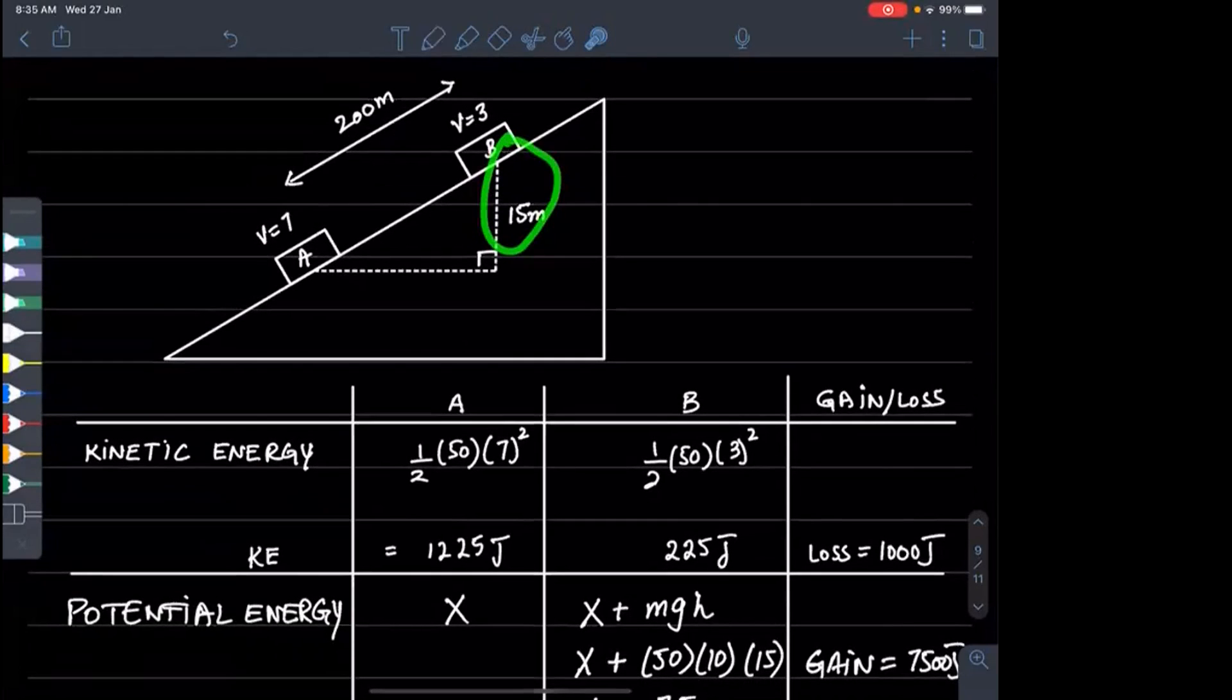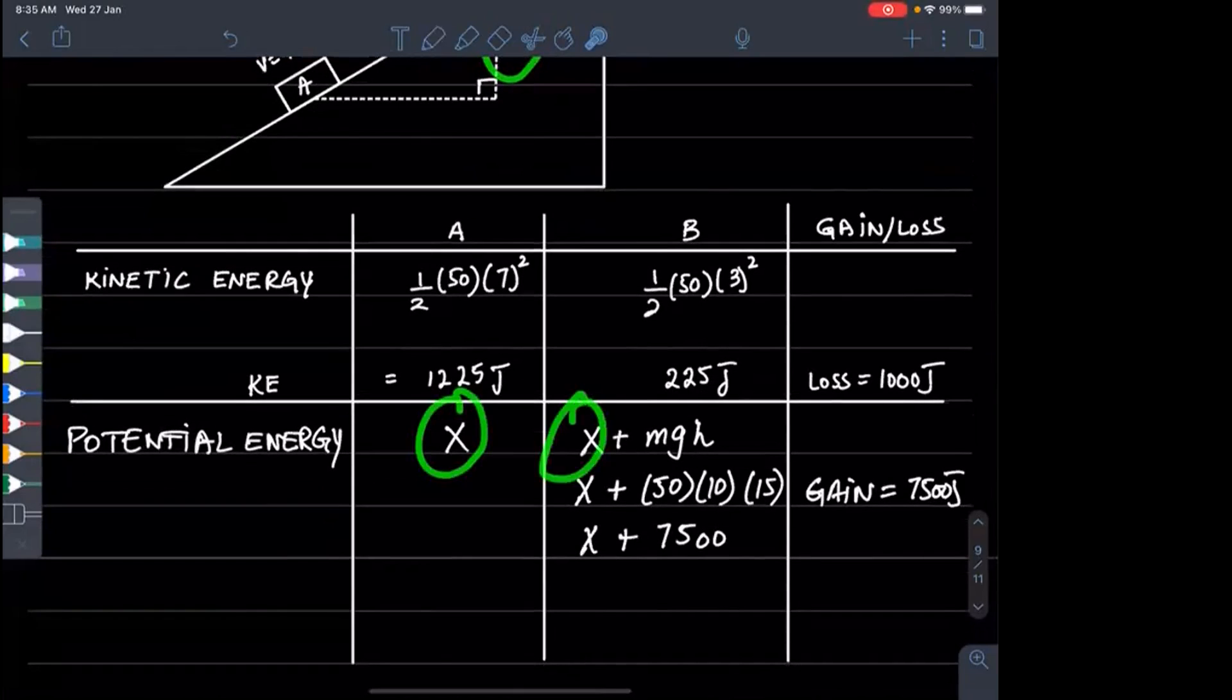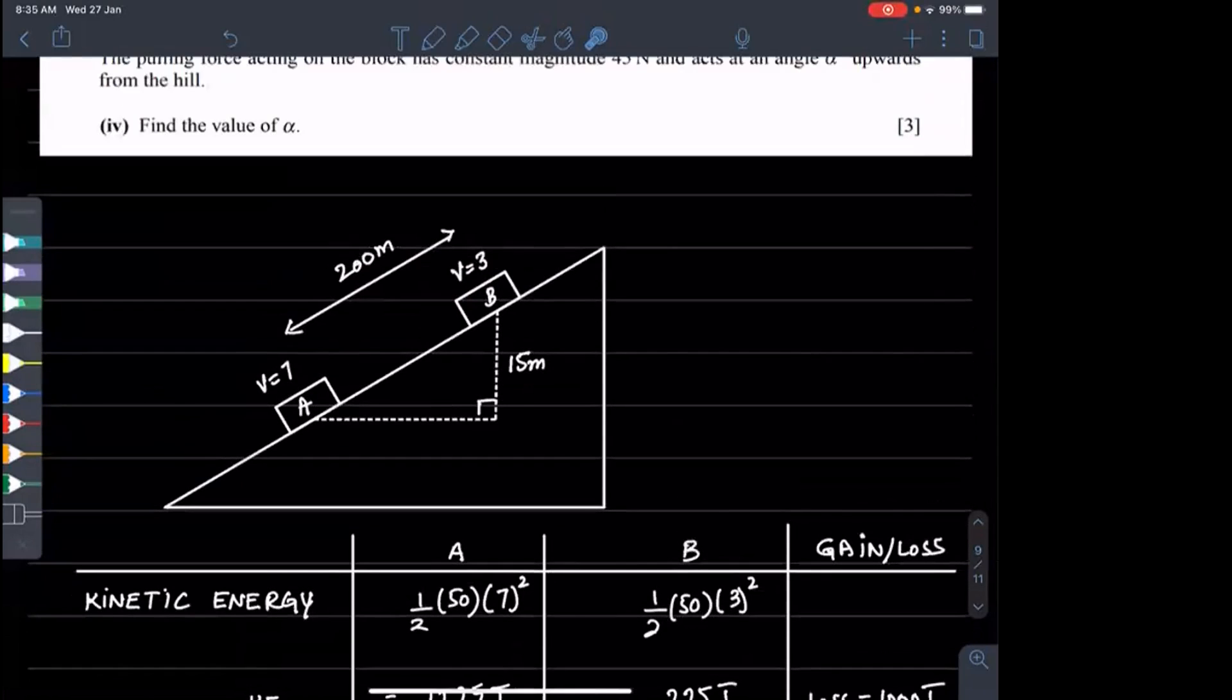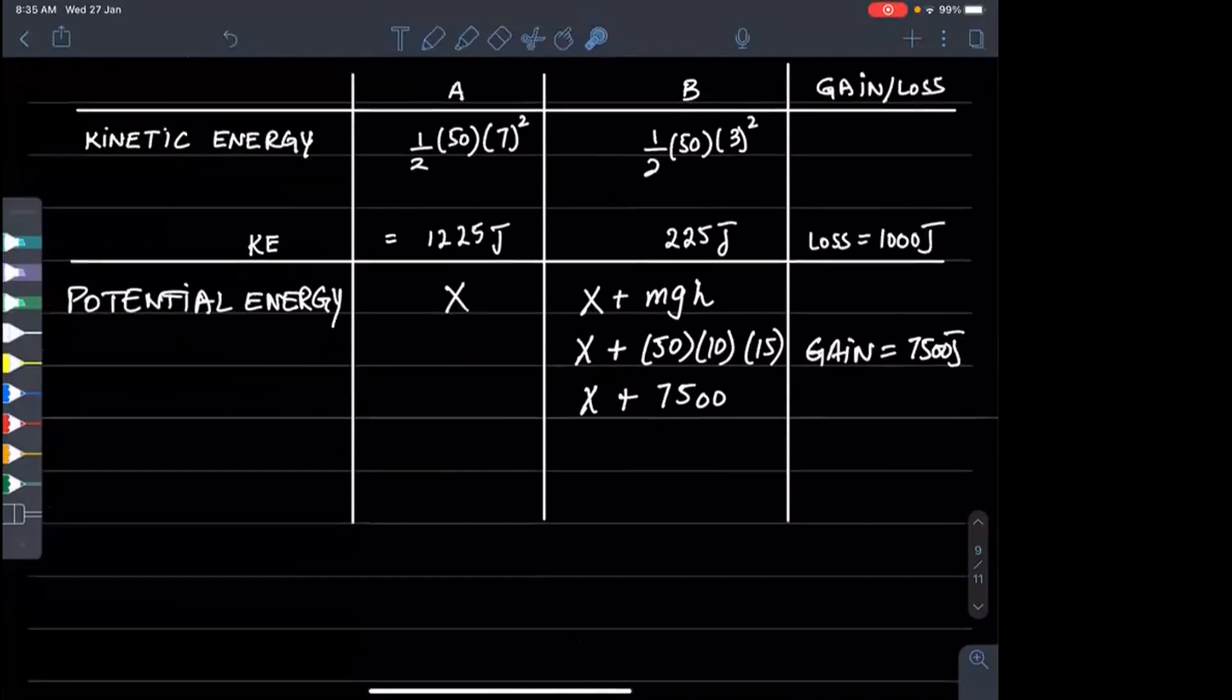At B, the potential energy is x plus the mgh gained, which is x plus mass 50 times g 10 times height 15, so x plus 7500. The gain in potential energy is directly mgh, which is 7500 joules.